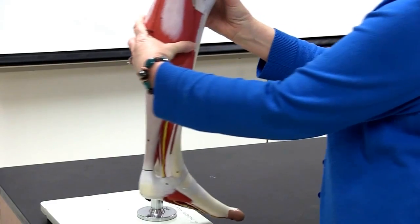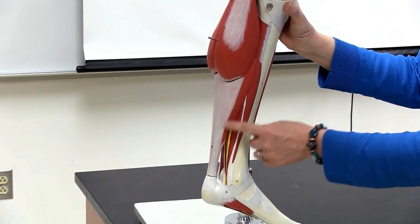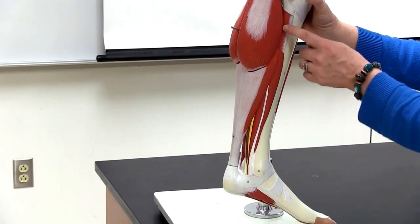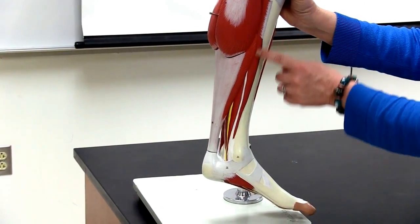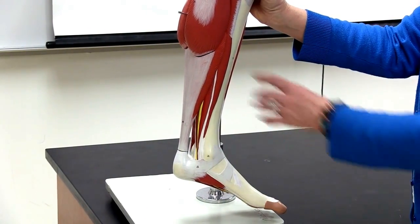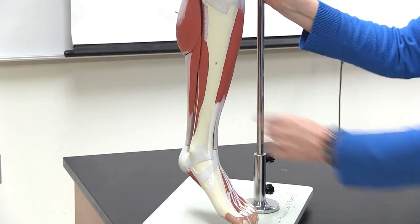If we come around to this side, we see again gastrocnemius and a piece of the soleus again. This muscle here next is going to be hallusis. And then we're back to the tibia bone again on the anterior side.